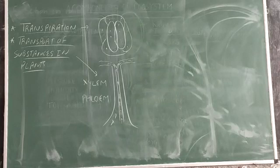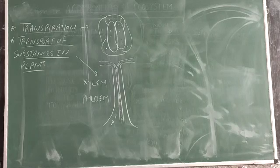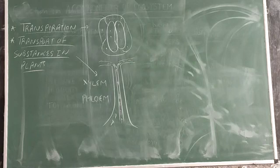From here we can understand that the water and minerals as well as the food which is manufactured by the plant is all conducted to all different parts by the help of the vascular tissue known as xylem and phloem.